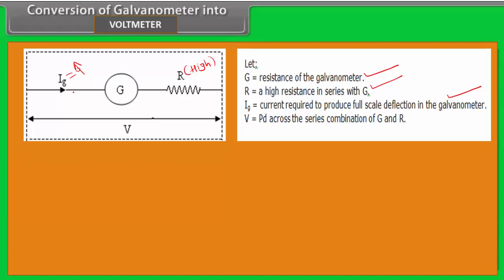When a certain amount of current is flowing in this circuit, the galvanometer shows full scale deflection. It is a very sensitive device. To avoid that sensitivity, the high resistance is introduced in series with this galvanometer, then it acts as a voltmeter. V is the potential difference across the series combination of G and R.